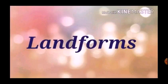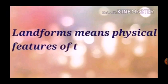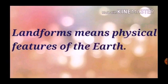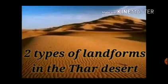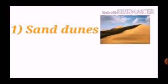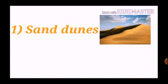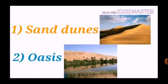Now let us see the landforms. Landforms means physical features of the earth. There are two types of landforms in the Thar Desert. The first type is sand dunes, and the second type is oasis.